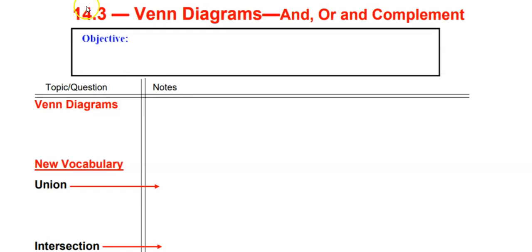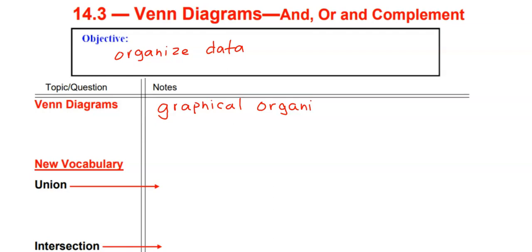Hello! Grab your packet and let's get started with 14.3 — this is a fun one. We're going to use Venn diagrams to illustrate some probability problems, talking about AND, OR, and complements with Venn diagrams. Our objective is to use Venn diagrams to organize data. Venn diagrams are basically graphical organizers — you can have two, three, or even four circles together.